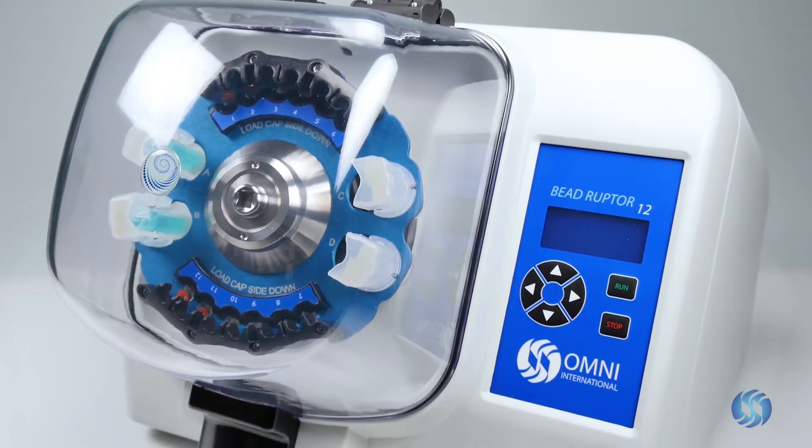The BeadRuptor12 is a powerful yet economical bead mill homogenizer. It is an ideal solution for laboratories requiring rapid extraction of high-quality DNA, RNA, proteins, or small molecules.